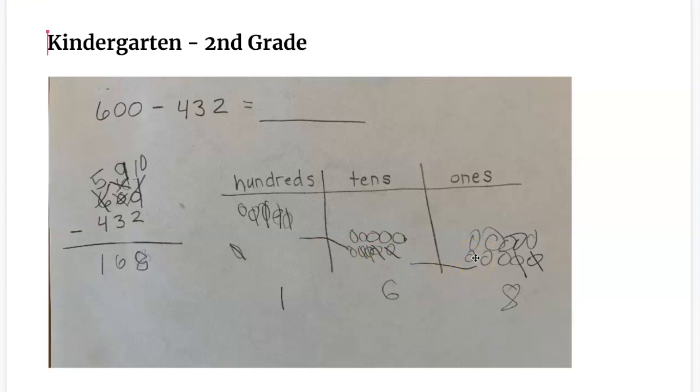Or they might add up from 432 to get to 600, which will demonstrate their understanding of the relationship between addition and subtraction. They might even write a written method that resembles the standard algorithm, but it should be related to a strategy based on place value. Students need ample opportunities to develop their own solution methods and understand the connection between the representations and the written methods.